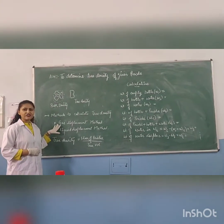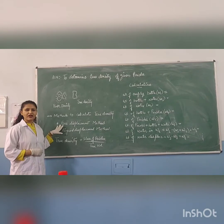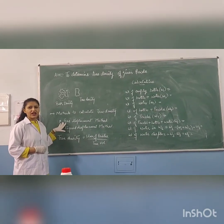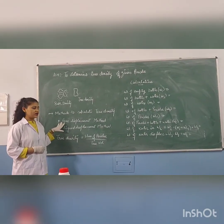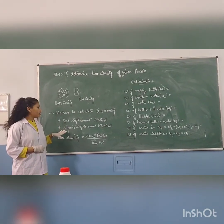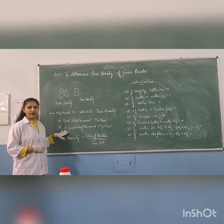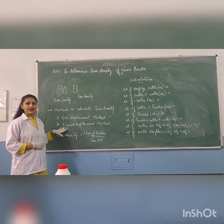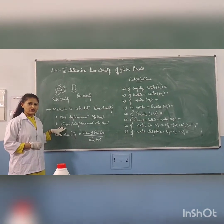The methods we use to calculate true density are the gas displacement method and the liquid displacement method. In the gas displacement method, the instrument used is a helium pycnometer. And for the liquid displacement method, we use the instrument known as a density bottle.